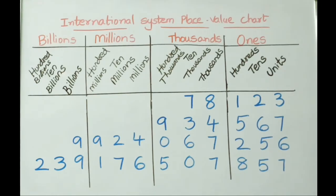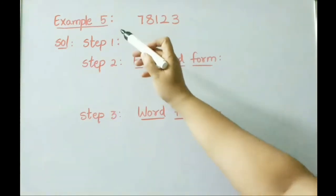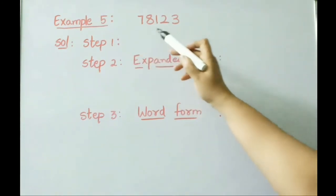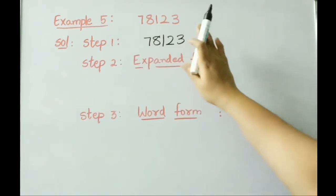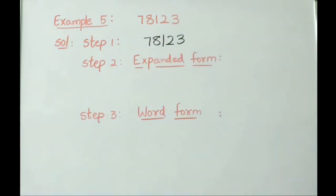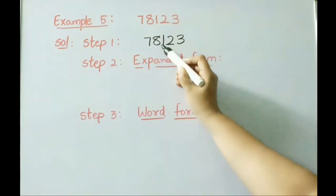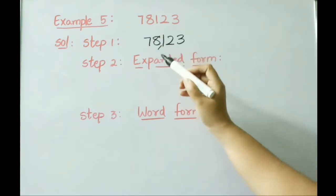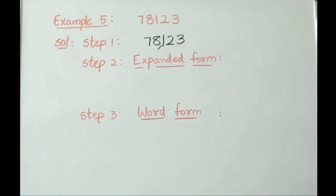Let us see Example 5: the number is 5,78,123. In the international system, three digits are separated by a comma, so the number is 78,123 — seventy-eight thousand one hundred twenty-three. Let us write this in expanded form in Step 2.